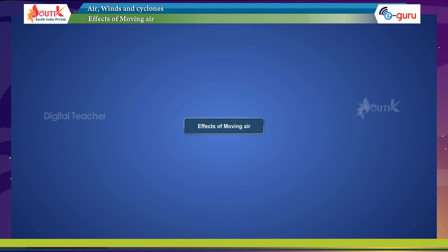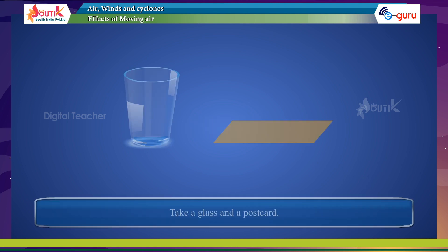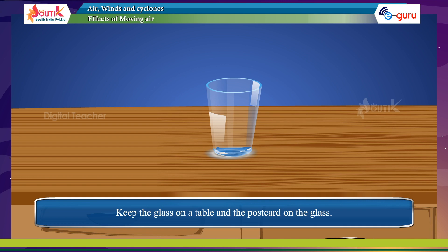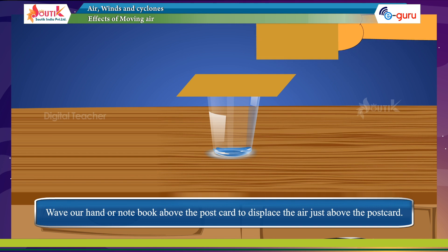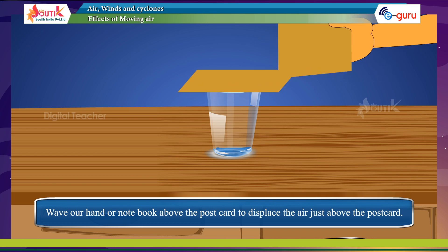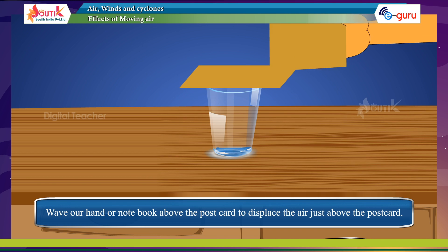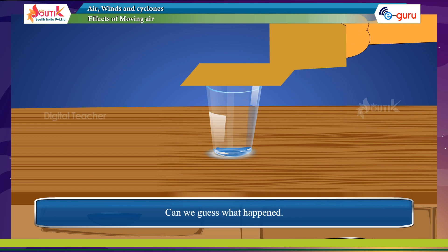This activity demonstrates the effect of moving air. Take a glass and a postcard. Keep the glass on a table and the postcard on the glass. Wave your hand or notebook above the postcard to displace the air just above it. Can you guess what happens?